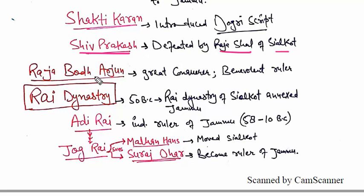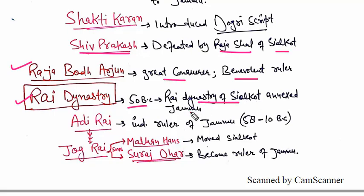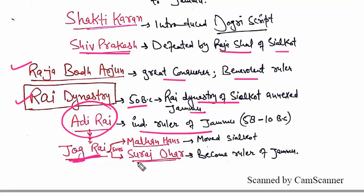One important ruler is from the Both dynasty. The king Arjun was a benevolent ruler and a great conqueror. Next we will talk about the Rai dynasty. The Rai dynasty was established around 50 BC. When the Rai dynasty was at Siyal court, they captured Jammu. The Rai dynasty was an independent ruler. A ruler named Jog Rai had two sons — one was Malhan and the other was Sordidhar.